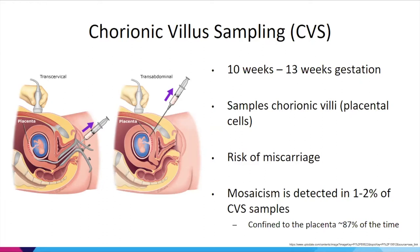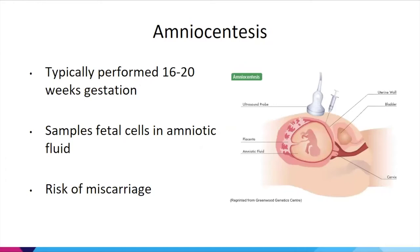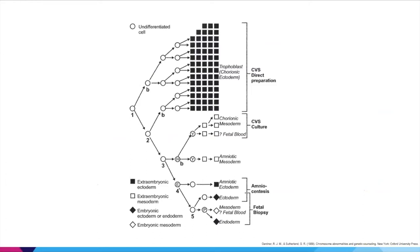Amniocentesis, in contrast, is typically performed between 16 and 20 weeks gestation, in the second trimester. Here we're sampling fetal cells — generally skin cells within the amniotic fluid. It also carries a risk of miscarriage. Understanding where these cells are coming from plays a role in how we interpret results. The original first cell of the pregnancy is undifferentiated, and as cells grow and divide they acquire a defined purpose.